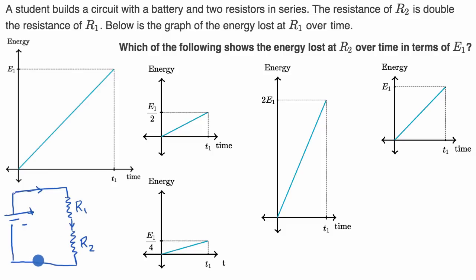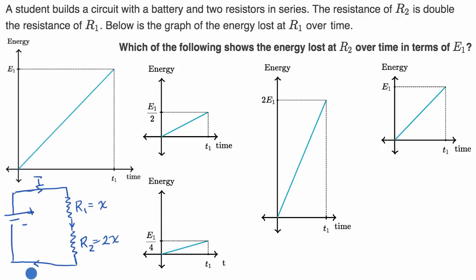At any point in the circuit, our current — let's call that I. Now they tell us how these resistances relate to each other. If R1 has a resistance of, let's call it X ohms, they tell us that the resistance of R2 is double the resistance of R1. So if R1 is X ohms, R2 is going to be 2X ohms. Now let's think about the energy dissipated across each resistor over time.